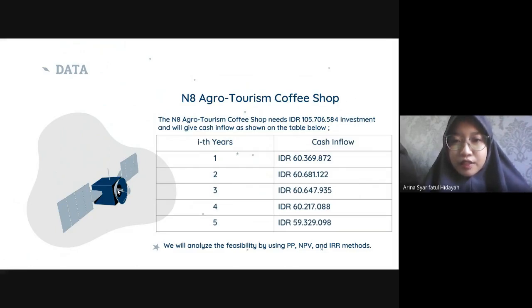The N8 Agro-Tourism Coffee Shop needs investment and will give cash inflows as shown on the table below. We will analyze the feasibility by using PP, NPV, and IRR methods. We have the cash inflow data for five years, which we can see in the table.